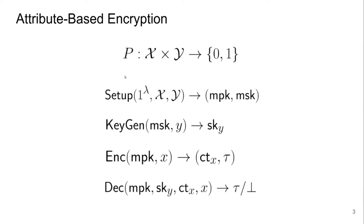More formally, an attribute-based encryption scheme for a predicate P consists of four algorithms: the setup algorithm that produces a pair of keys (run by the university); the key generation algorithm, which requires the master secret key known only by the university, and on input an attribute y produces a secret key for y; encryption, which can be run by everybody knowing the master public key, and on input an attribute x produces a ciphertext for x along with a symmetric key usable as a key encapsulation mechanism; and decryption, which on input a key and a ciphertext produces the symmetric key — the same one produced during encryption — if the predicate between x and y holds, or fails otherwise.